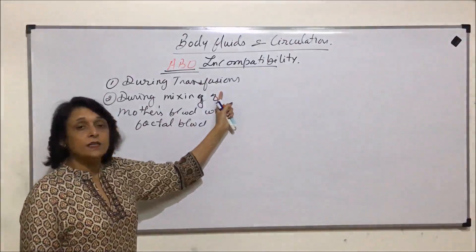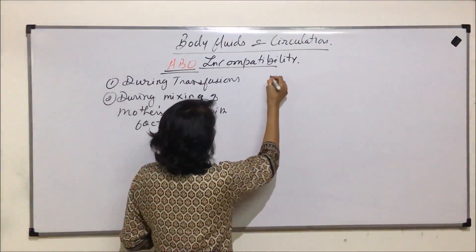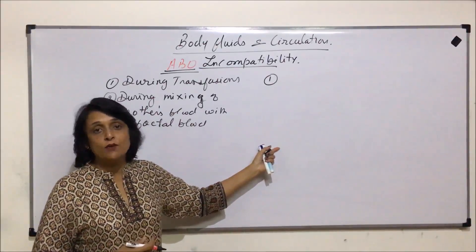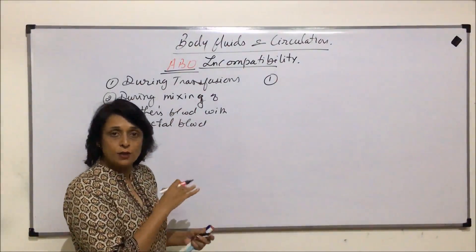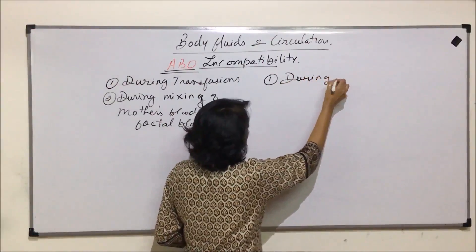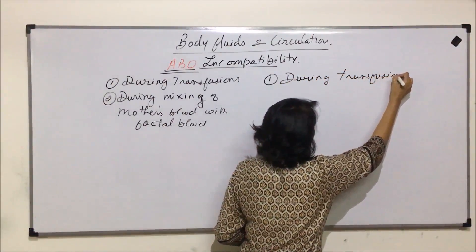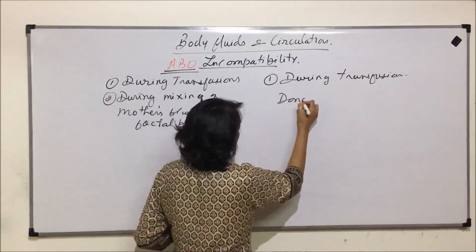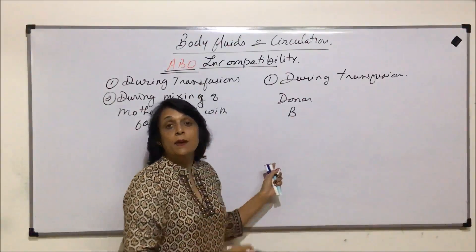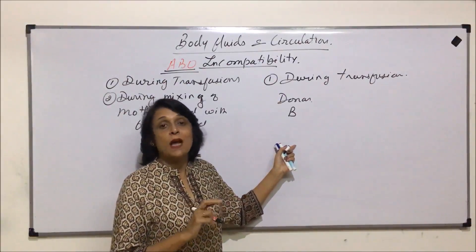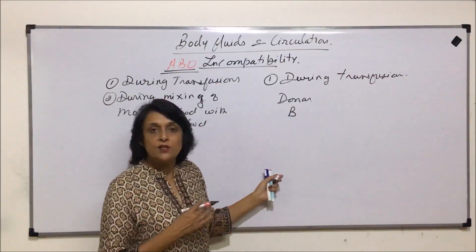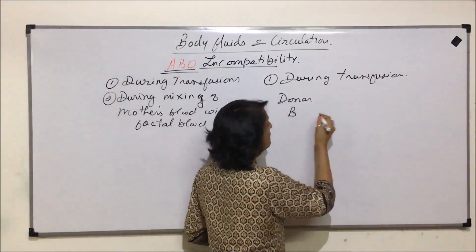We will discuss situation one: transfusion-related incompatibility. Suppose the donor has blood group B and the recipient has blood group O. This situation should not normally happen because blood groups are matched before transfusion, but we are examining what complications can occur if the matching is not properly done.